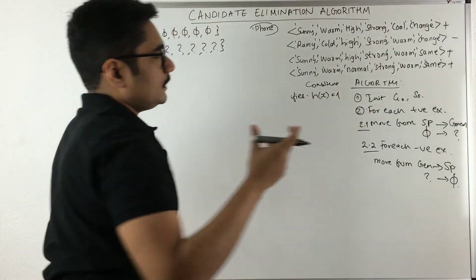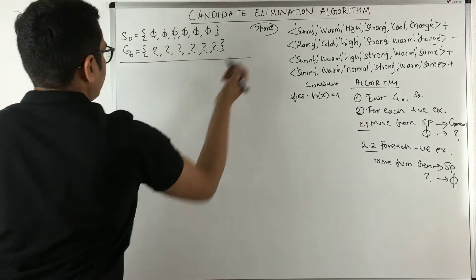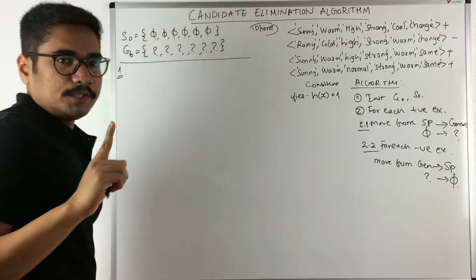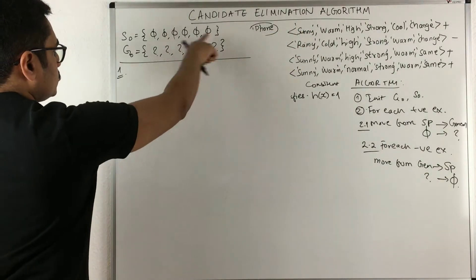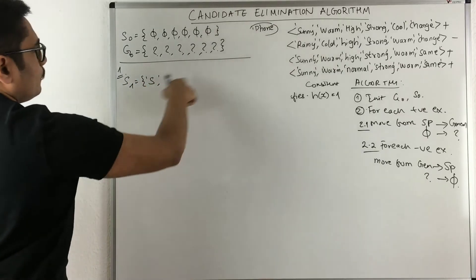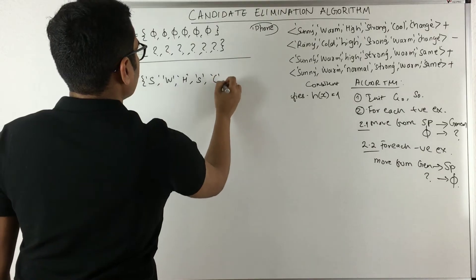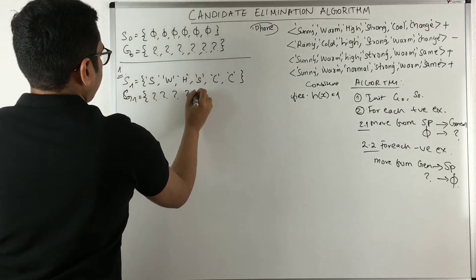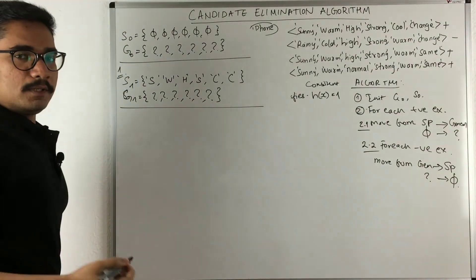We consider the very first sample, which is positive. For the first positive example we only make changes to the specific boundary, just like in Find-S. So S1 becomes: sunny, warm, high, strong, cool, change. G1 remains the same as G0.